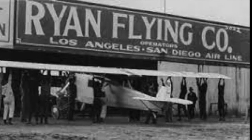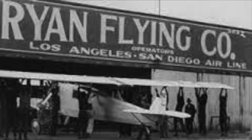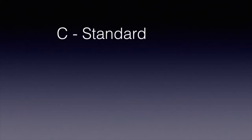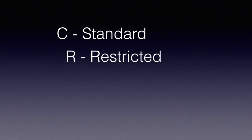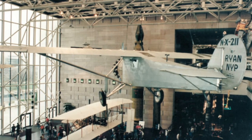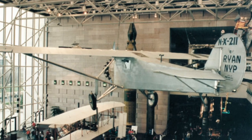A second letter indicating the aircraft's airworthiness category followed the November and preceded its identification numbers. These airworthiness identifiers were C for standard, R for restricted, X for experimental, and later L for limited. For example, you would have November Charlie 1234 — a U.S.-based standard aircraft with an identifier of 1234.